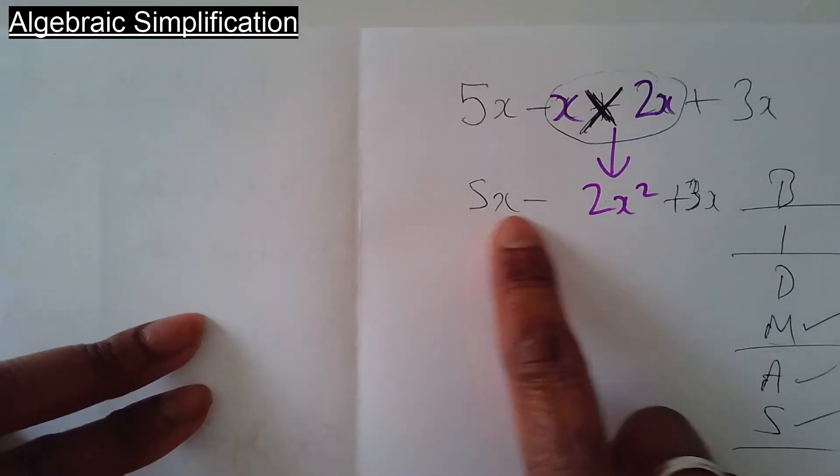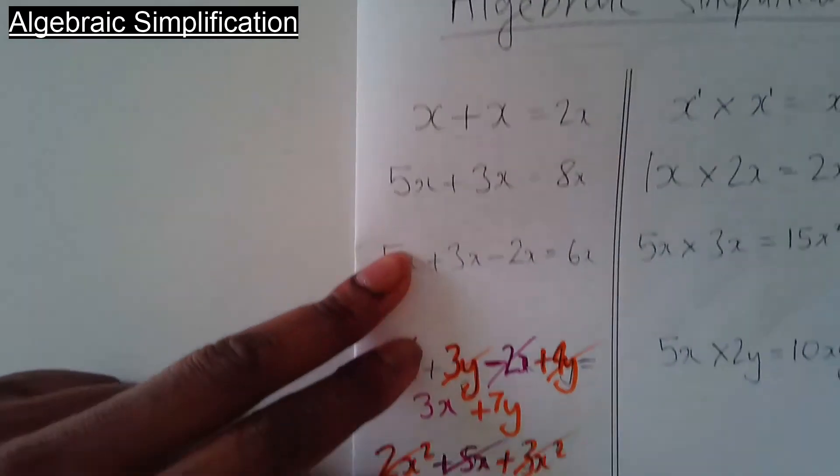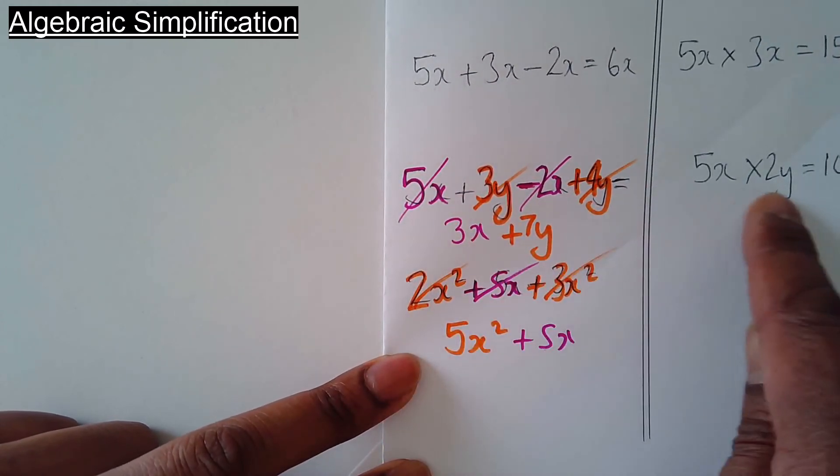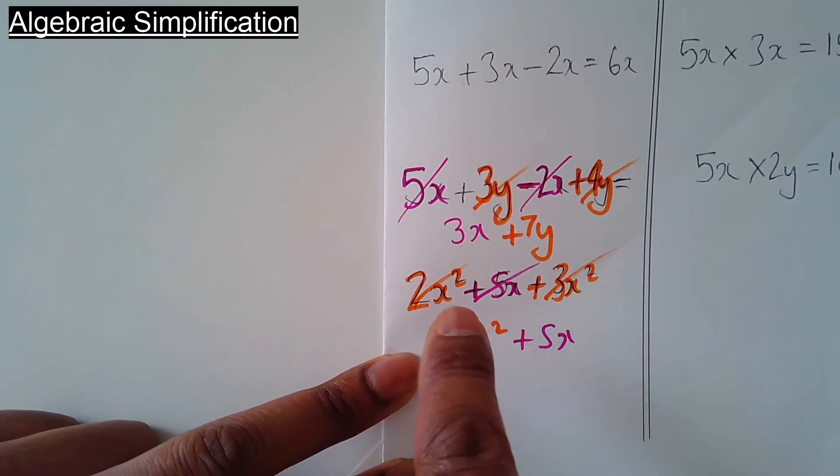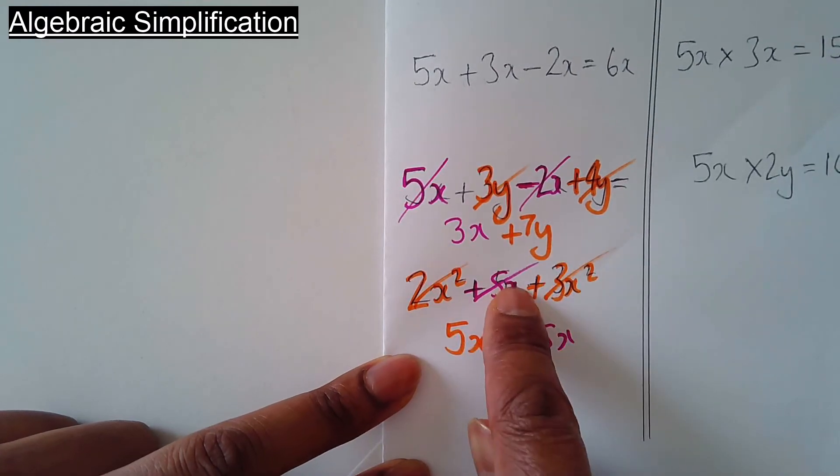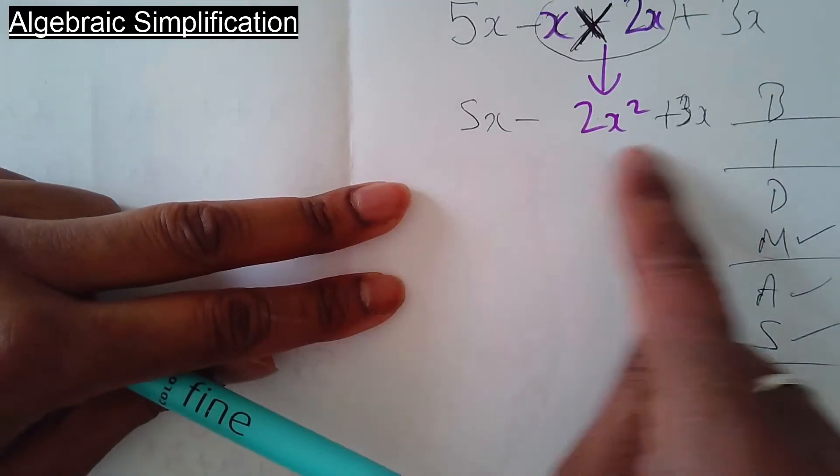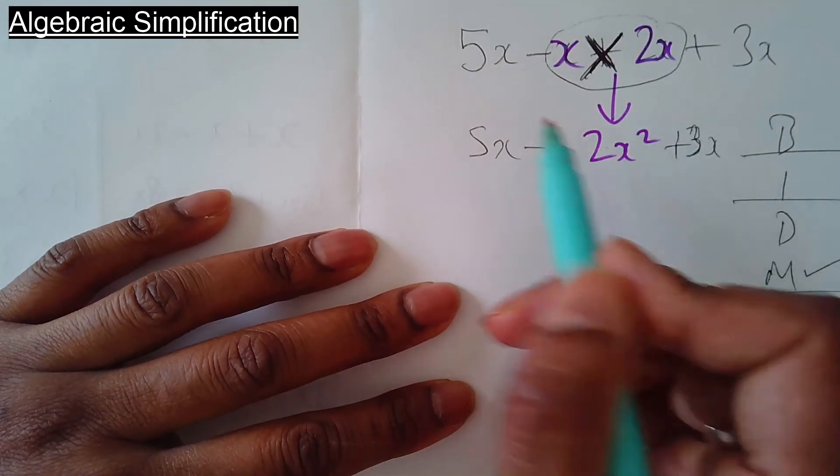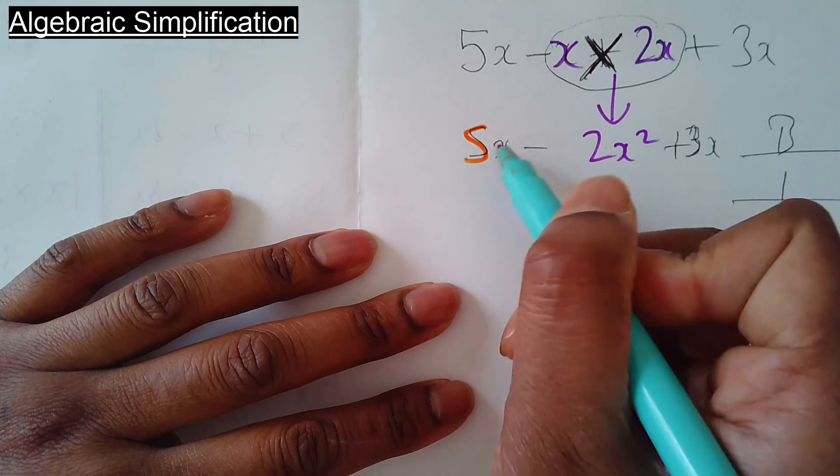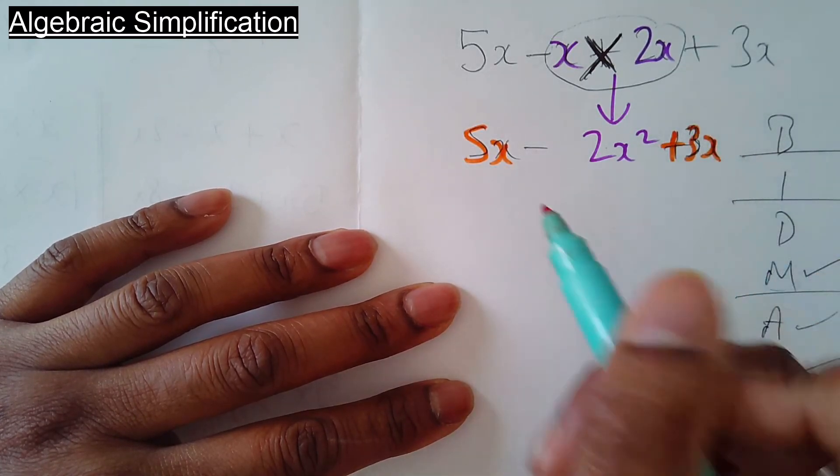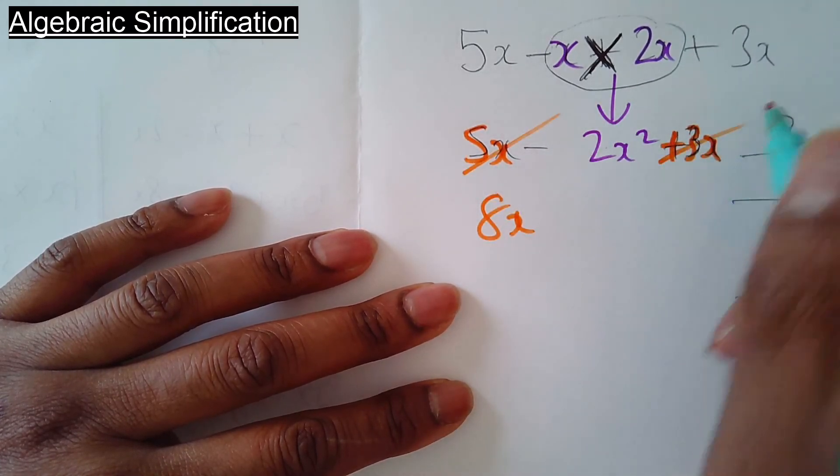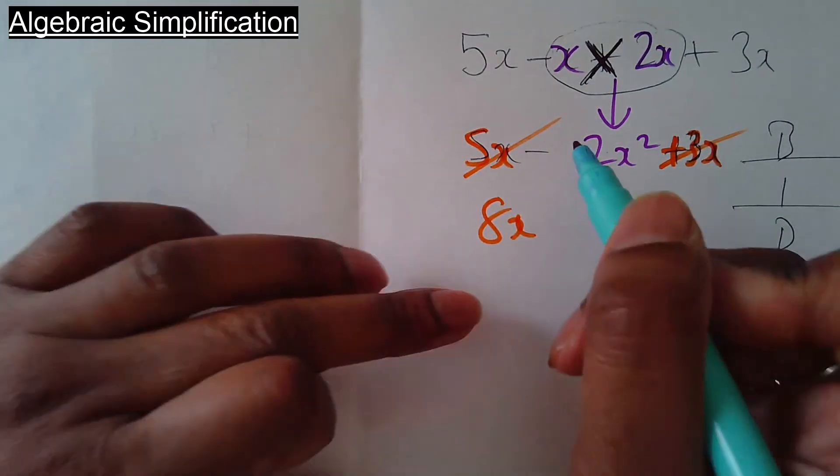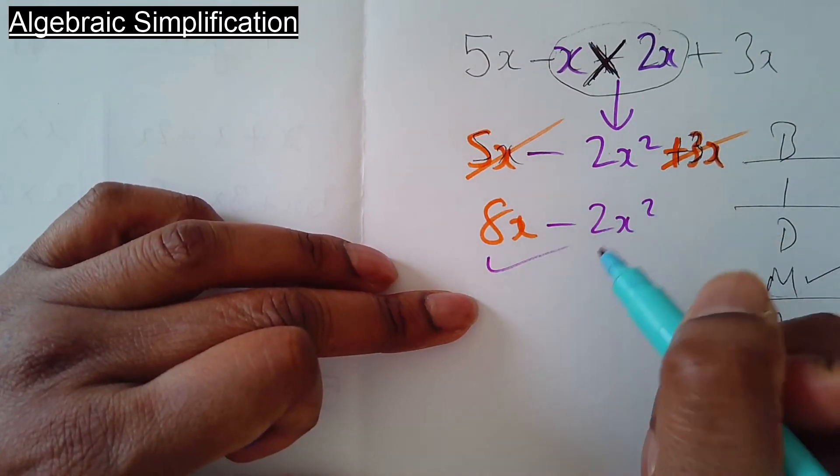So now, to simplify this becomes very similar to this over here. We had the x squared term and the x terms, two different families. So we've got the same situation here. What I'm going to do now is look at the x terms first. That's 5x plus 3x, which makes 8x. And you've got the x squared family by itself, so you've got minus 2x squared. That's done.